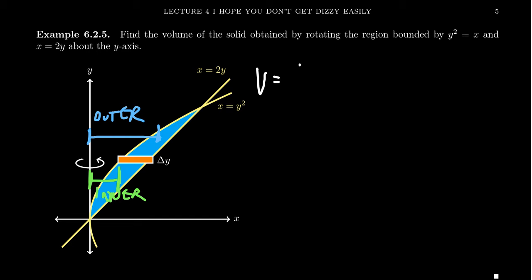So the volume is going to equal the integral. If we apply the definition of the washer method, we're going to get pi times the difference of squares. We take the outer radius first, and so the one that's farther away from the x-axis is going to be the line x equals 2y. So we're going to get 2y squared minus the inner radius, which in this example would be the parabola x equals y squared, so y squared squared.